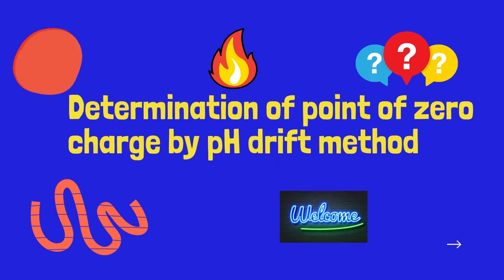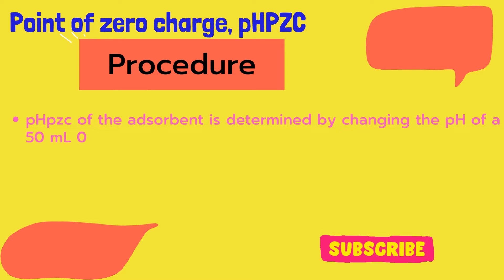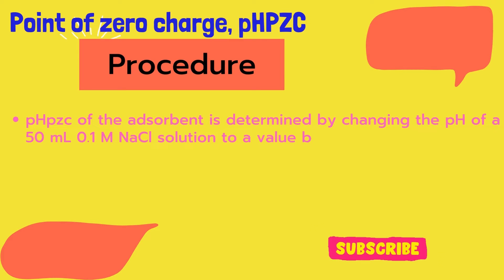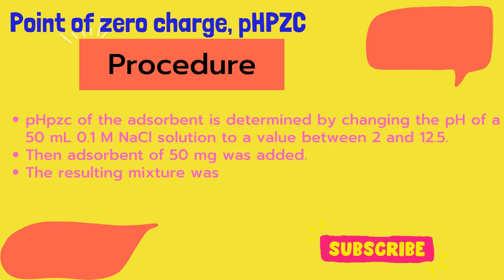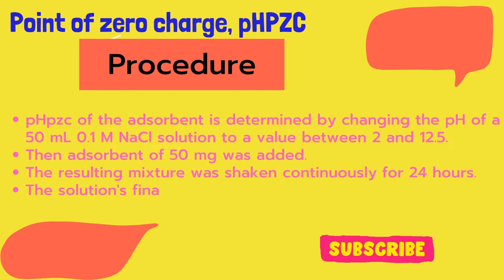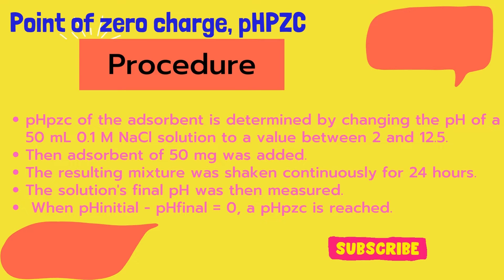In order to determine point of zero charge, you need to follow these procedures. Number one: the point of zero charge of any adsorbent is determined by changing the pH of 50 milliliters of 0.1 molar sodium chloride solution to a value between 2 to 12.5. Then, adsorbent of 50 milligrams was added. The resulting mixture was shaken continuously for 24 hours using an orbital shaker. Then, the solution's final pH was measured.